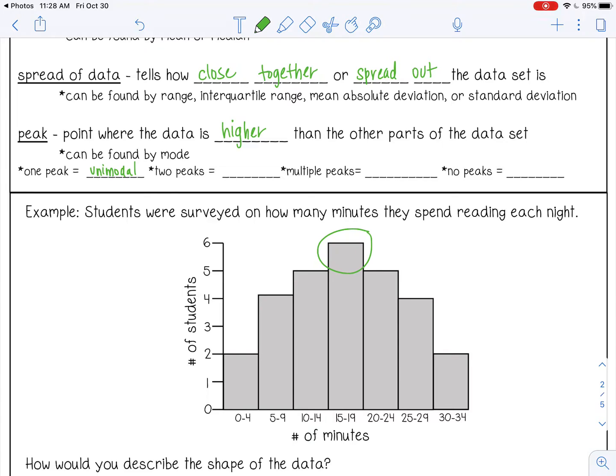If you have two peaks, that's called bimodal, which just means two modes. If you have multiple peaks, that's called multimodal. And then no peaks means it's uniform, which means all the data is in a straight line. There's no peaks.